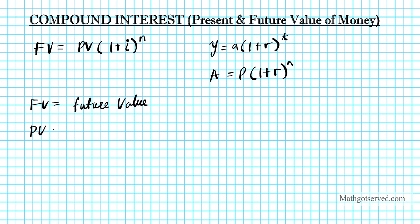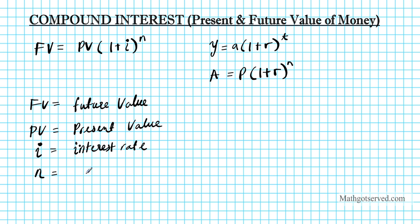PV is the present value. I is the interest rate. And N is the accrual period — you can call it the accrual period or the time. T makes it explicit: T is the time period with which you invested your money.